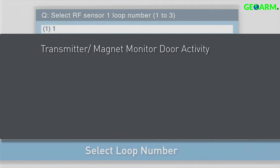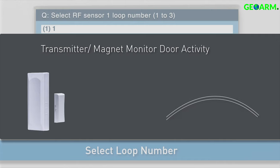In most applications, the transmitter and magnet are used to monitor door activity. For this application, the wire lead is not used. Select loop 2 for this application.